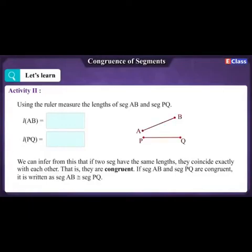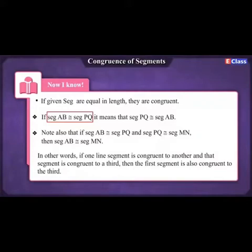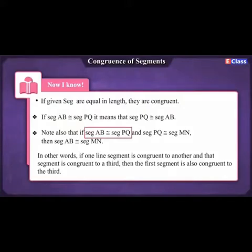We can infer that if two segments have the same length, they coincide exactly with each other — that is, they are congruent. If segment AB and segment PQ are congruent, it is written as segment AB is congruent to segment PQ. If segment AB is congruent to segment PQ, it means segment PQ is also congruent to segment AB.